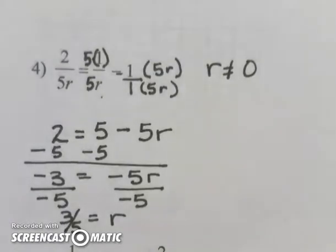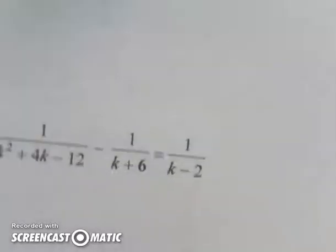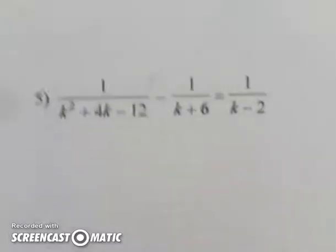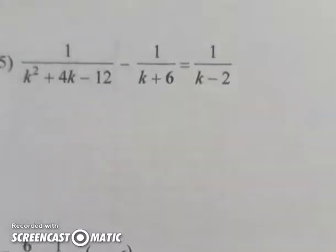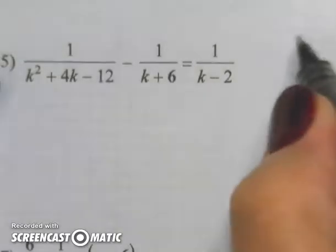I want to look at one more example of finding common denominators and solving the equation. I look at this problem and I see that I've got a k squared plus 4k minus 12 on the left that probably can factor. So I'm going to think about that for just a minute.